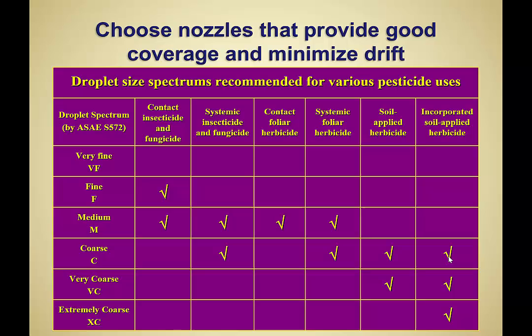For contact products like insecticides and fungicides, we want a smaller droplet size. As we move toward herbicides and soil-incorporated products, we move to bigger droplets. The key is balancing coverage and efficacy against drift mitigation.